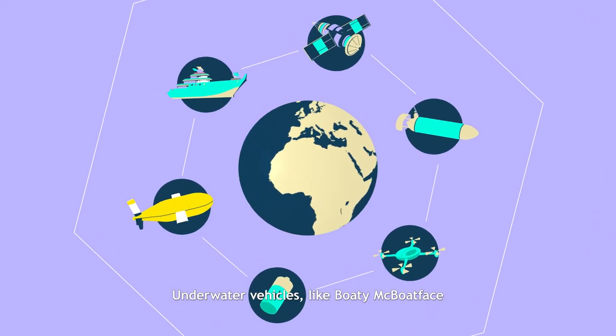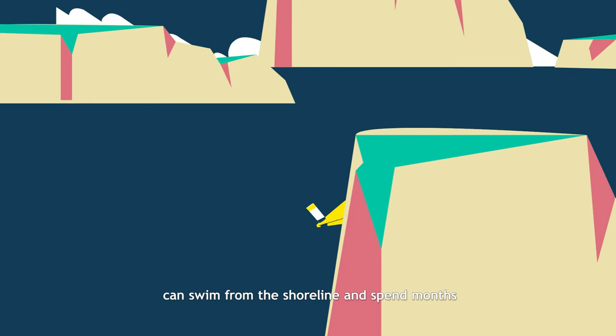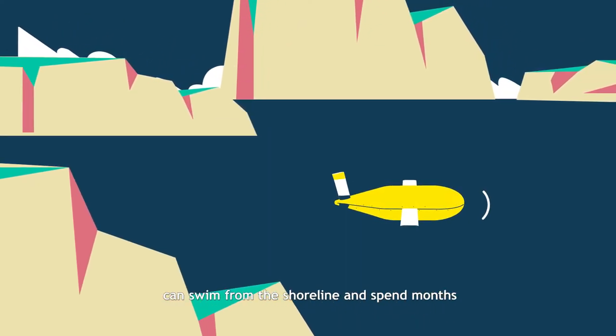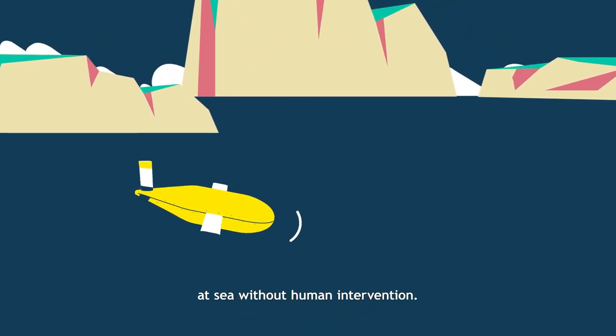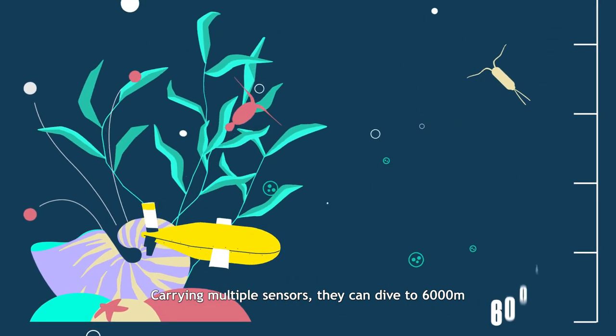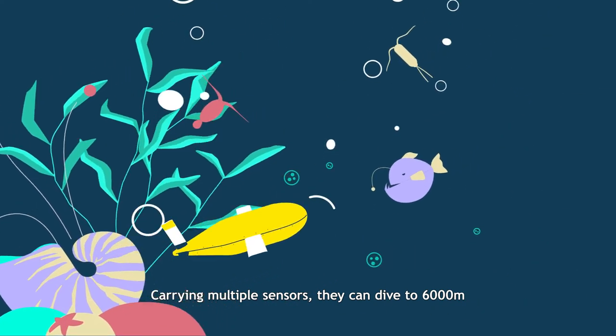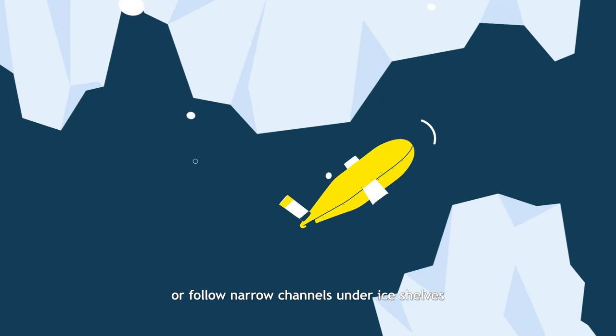Underwater vehicles like Boaty McBoatface can swim from the shoreline and spend months at sea without human intervention. Carrying multiple sensors, they can dive to 6,000 meters or follow narrow channels under ice shelves.